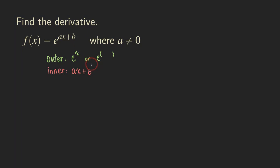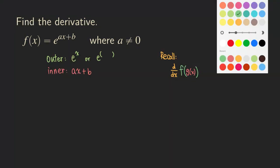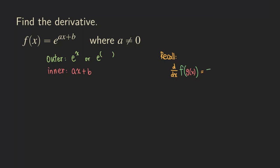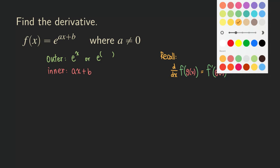Now let's recall the chain rule. The chain rule says that when you differentiate a function inside another function — an outer function and an inner function — you take the derivative of the outer function, then plug the inner function in there, and then multiply by the derivative of the inner function.